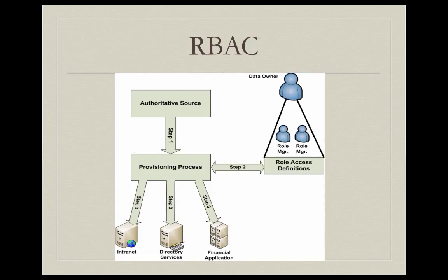The role access definitions are put into the provisioning process. The authoritative source job codes and the people assigned to those job codes come from the HR system and are fed to the provisioning process. The data owner and role managers, working with security and often with auditors, set up access definitions for each role. The authoritative source supplies the job codes and assigned users to the provisioning process. When a user logs in, the provisioning process determines what role that user is assigned, and based on that, the user is given access to the appropriate resources.